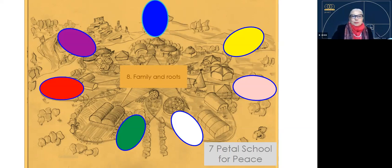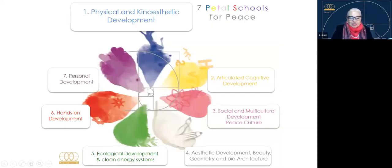Remember the seven petals? We talked a lot during level one. It's a blue petal here, up here. On the slide you can see the physical and kinesthetic development, anything with physical movement, physical exercise, movement, dance, anything to have a very healthy body and something you like. And if possible, not competitive. Then we have the cognitive, but it has to be articulated and fun. The social and multicultural development. The aesthetic, which is art, ecological and so on. Personal development.